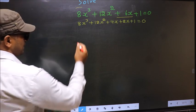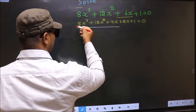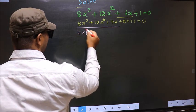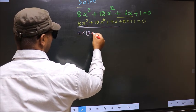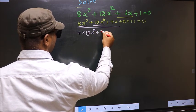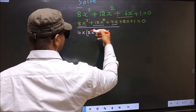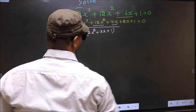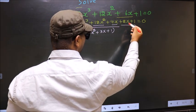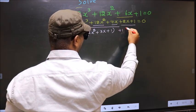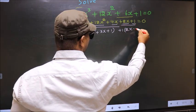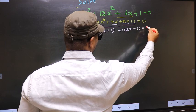Now from the first 3 terms, what can be taken out common is 4x. So you get 4x(2x² + 3x + 1). From the last 2 terms, we can take out +1 common, giving +1(2x + 1). So the equation becomes 4x(2x² + 3x + 1) + 1(2x + 1) = 0.